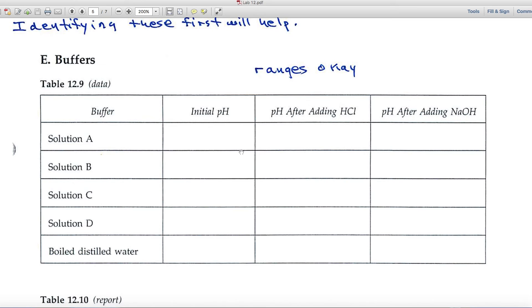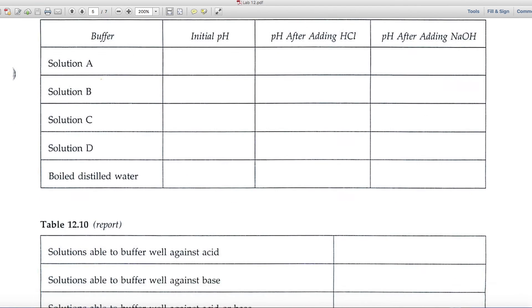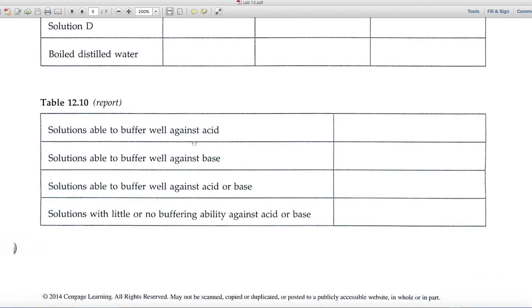You'll add some acid and again measure the pH. You'll add base and measure the pH. And a buffer would be one that resists a change in pH as you add acid or base. And that's where you'll use this information right here when you come to the report.